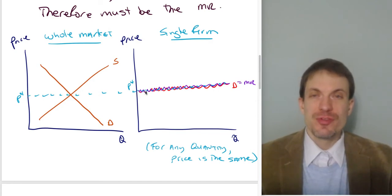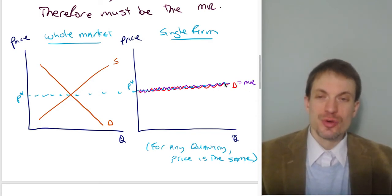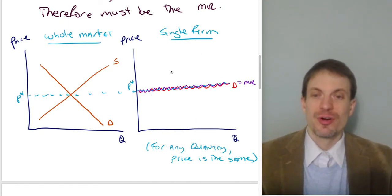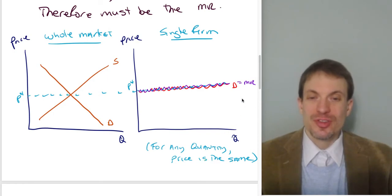And here's the graph of the price, the demand curve, and marginal revenue for a single competitive firm. And so my observation here: for any quantity, the market price is the same.